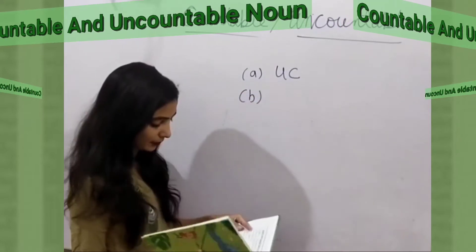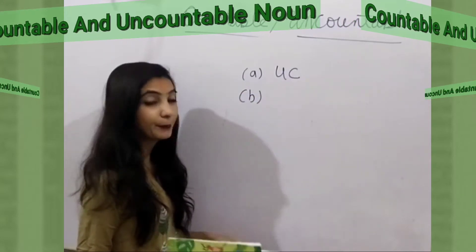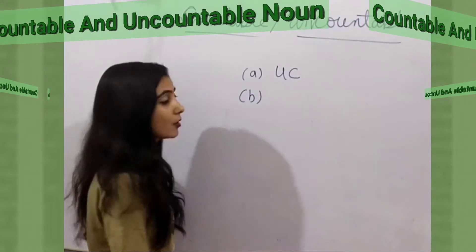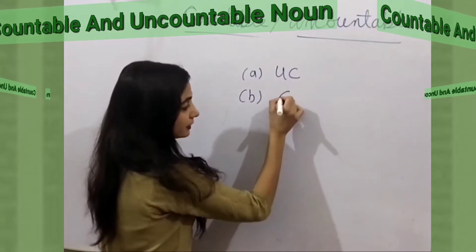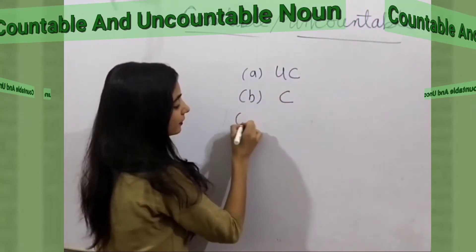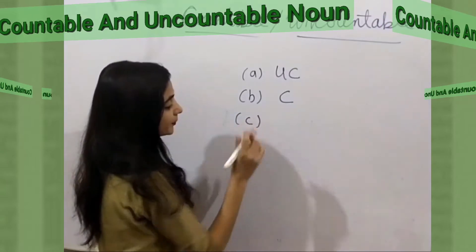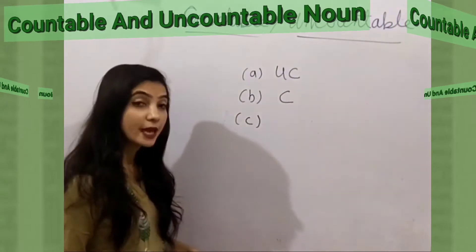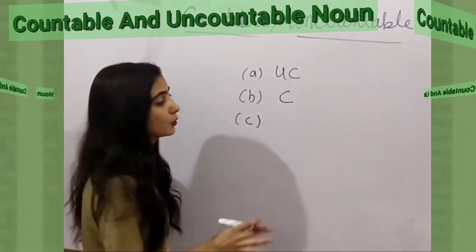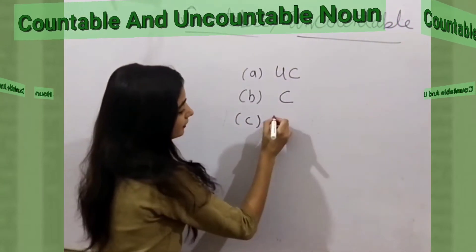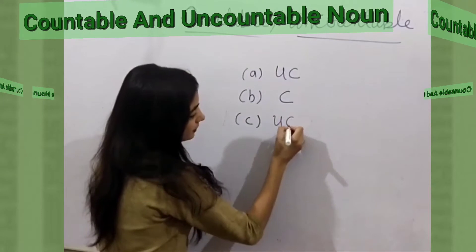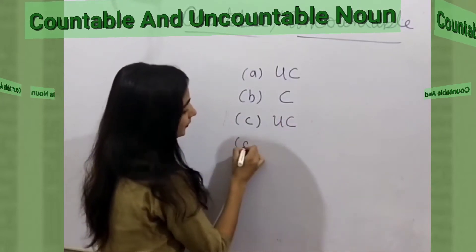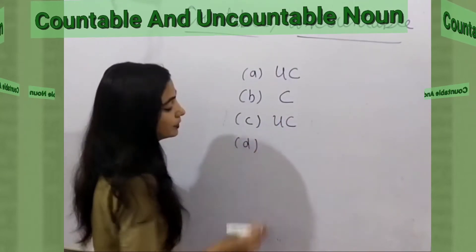What's next? Men. Men are countable, so we write C. What's next? Sand. We cannot count sand, so this is uncountable — UC.